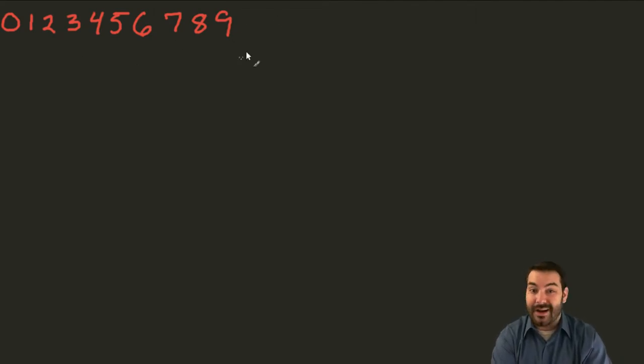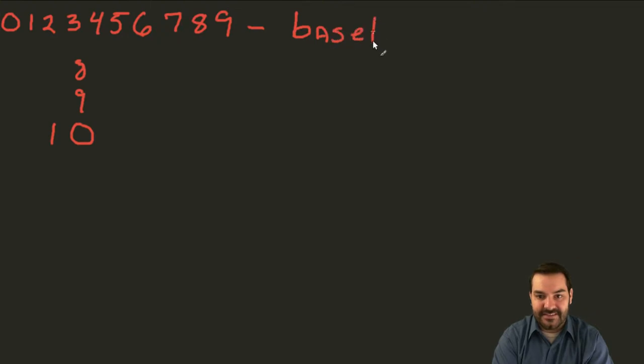You know, I have nine things. What happens when I run out of these symbols? Well, what happens is I go 8, 9, I reset this to 0, and I increment by 1 on the left-hand side. Well, we call this something known as base 10.